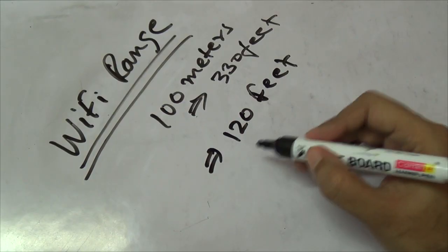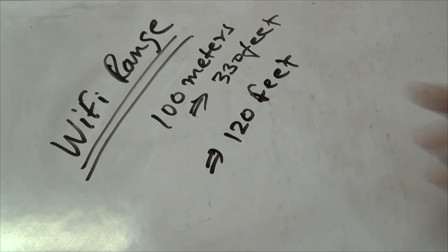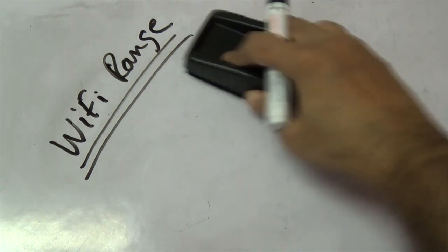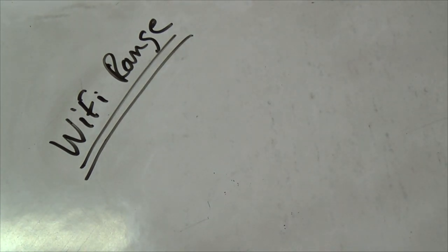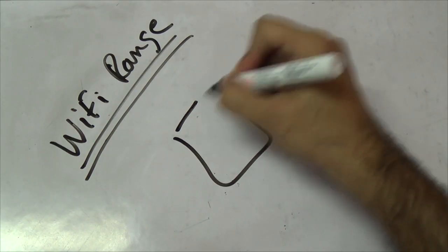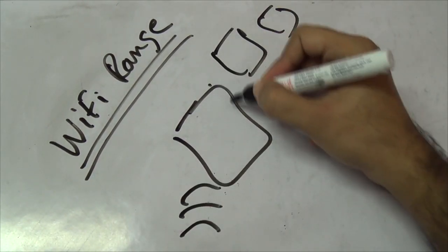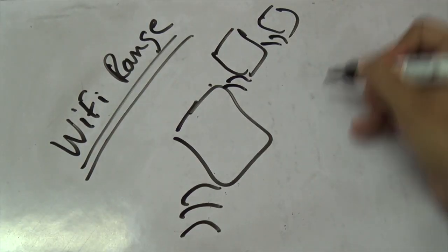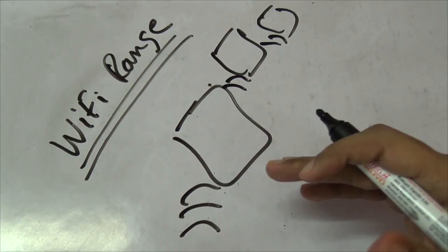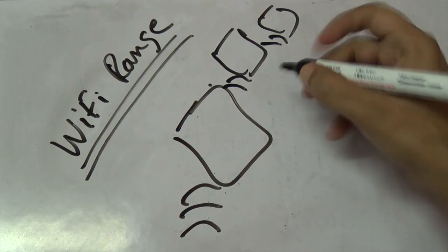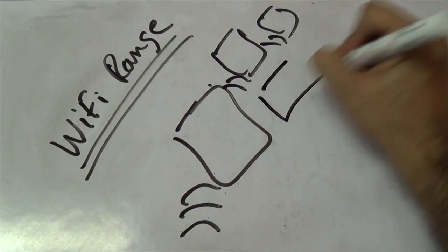Do remember that the range that you will get will depend upon the construction of your house, the number of walls that you have. For example, if you have a lot of walls, doors, etc., the Wi-Fi penetration actually slows down. So if you have a house that has a lot of walls, definitely Wi-Fi performance will go down and you might have to invest in a device like a Wi-Fi repeater.